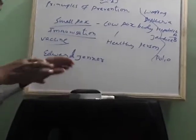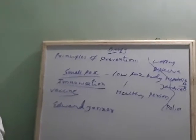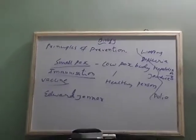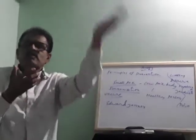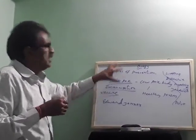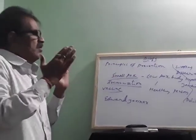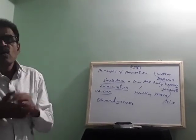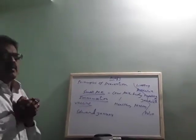Edward Jenner used to take liquid from the body of persons affected by smallpox and insert that liquid into another unaffected person, so that in his future, that person would not be affected by smallpox. In this way he found vaccines against disease-causing microbes, and he was awarded a prize for this.